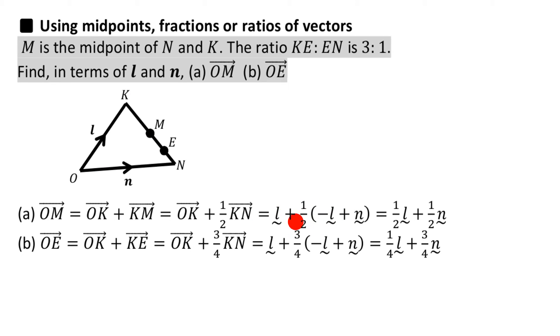Then you just simplify that, just like you do with normal algebra. This is L plus half of minus L, so L minus half L is half L, and then you do half times N, which is half N. This just simplifies to that. So you've just worked out O to M. O to M equals half L plus half N. Now if that sounds complicated, let's just quickly go through that really quickly again.